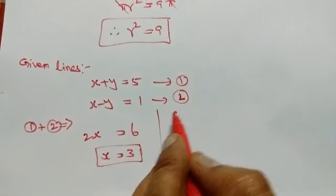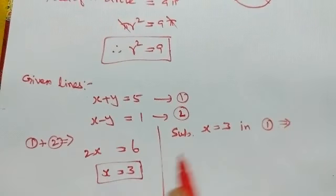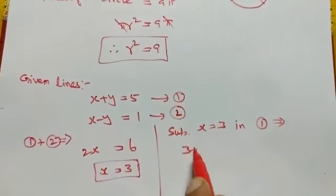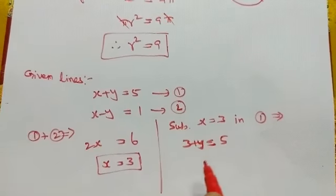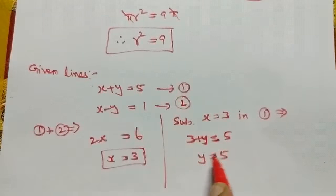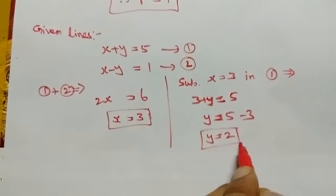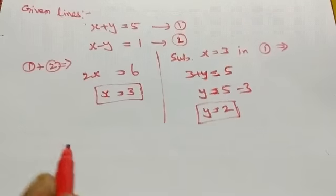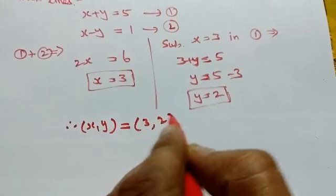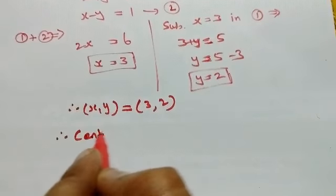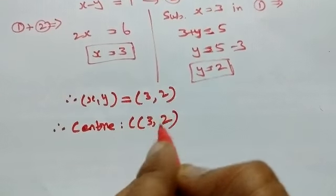Substitute x equal to 3 in equation 1: 3 plus y equal to 5, so y equal to 2. Therefore, x equal to 3, y equal to 2. Therefore the center is C of (3, 2).